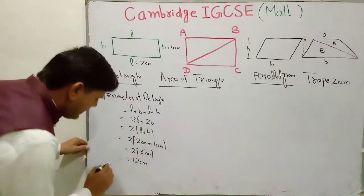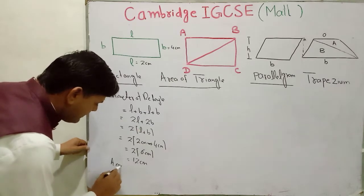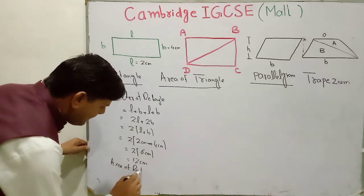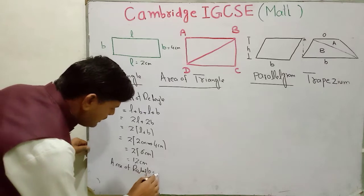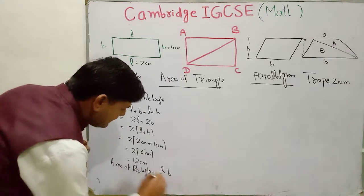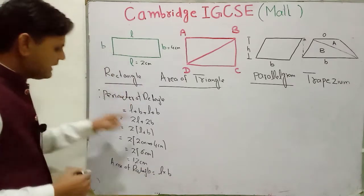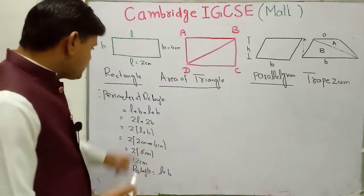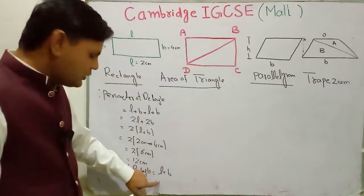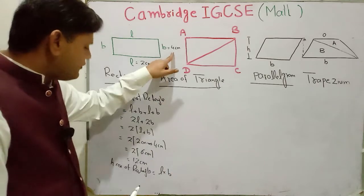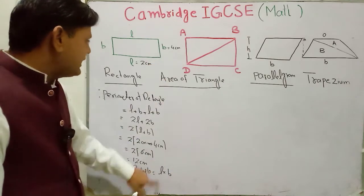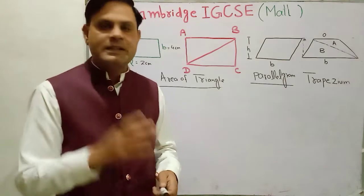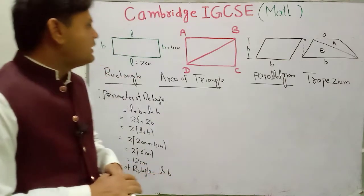Area of rectangle is equal to L cross B, meaning length multiplied by breadth. So if you put the value of length as 2 and breadth as 4, then your area will be 2 times 4, which is equal to 8 centimeter squared.